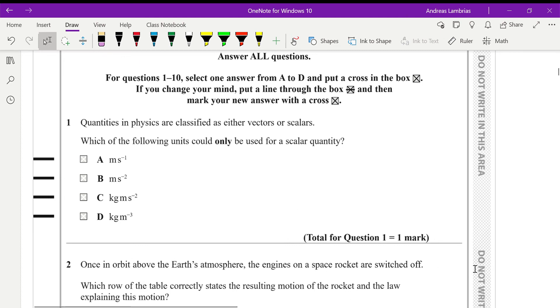In this question, we need to identify which of the following units could only be used for a scalar quantity. The first one, we can identify this to be the units for velocity, meters per second. So we know it's displacement over time. Velocity is a vector quantity, therefore it's not this one.